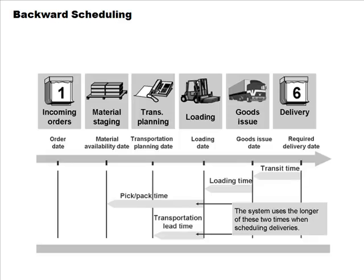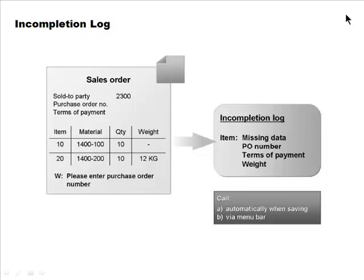Backward scheduling adds up the individual lead times and calculates whether the deadline can still be met from today. If backward scheduling shows the deadline can't be met, the system performs forward scheduling: starting from today, it calculates the earliest possible delivery date by adding each step's lead time.